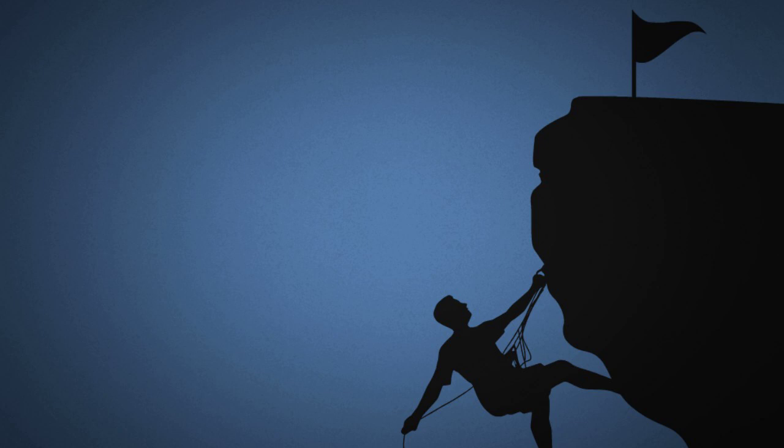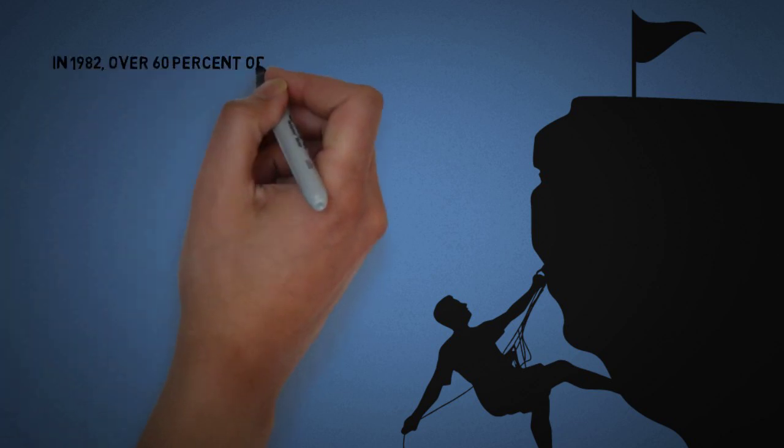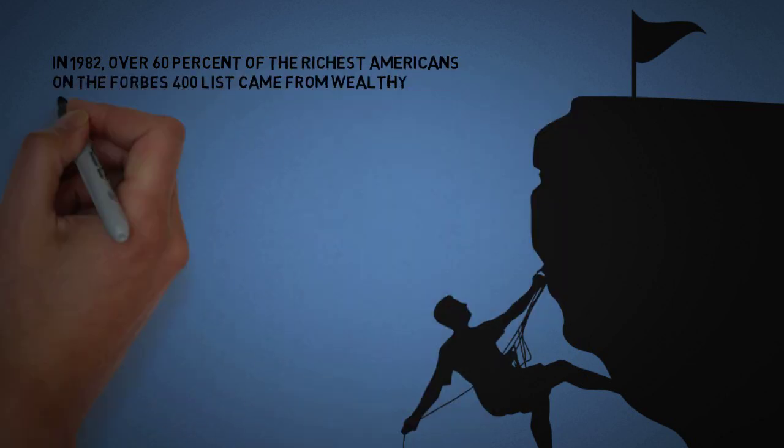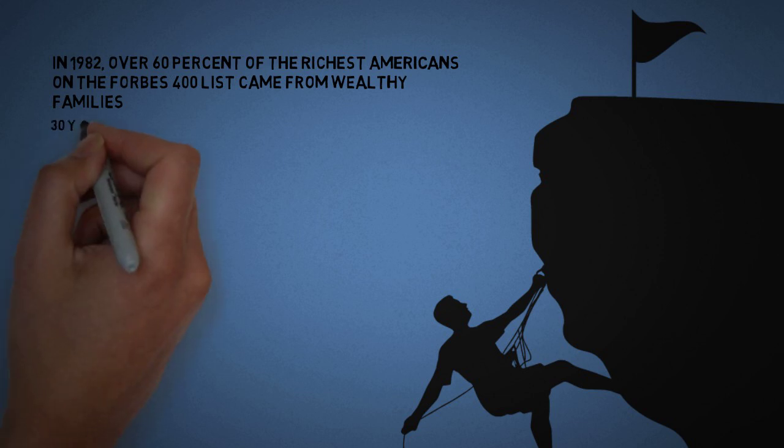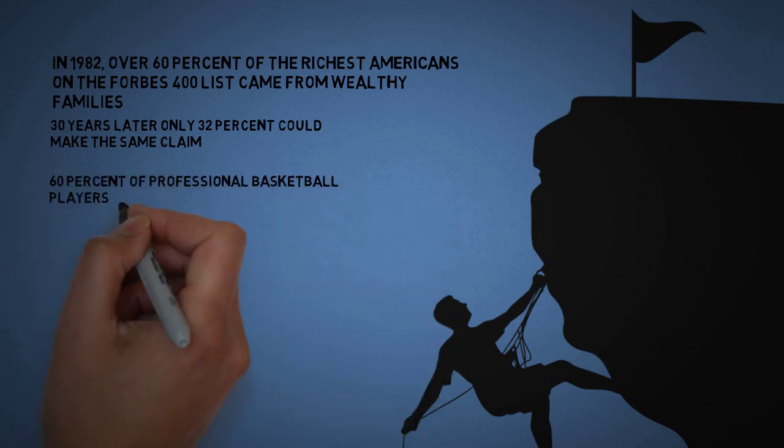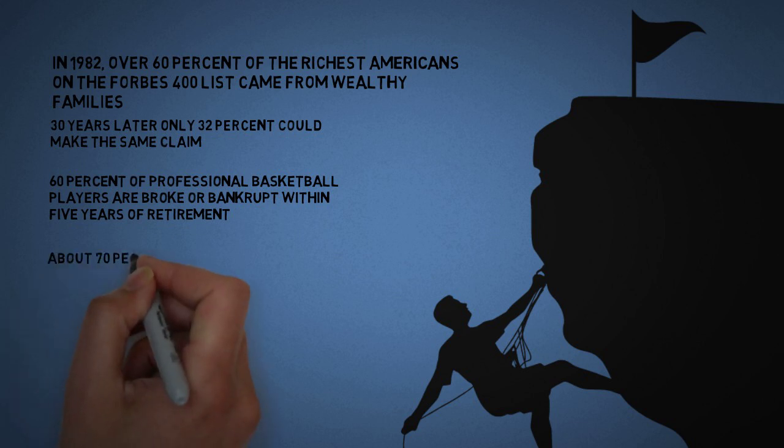Here's some facts: in 1982, over 60% of the richest Americans on the Forbes 400 list came from wealthy families. 30 years later, only 32% could make the same claim. 60% of professional basketball players are broke or bankrupt within five years of retirement. About 70% of all lottery winners end up broke or bankrupt.